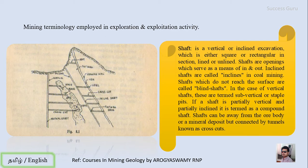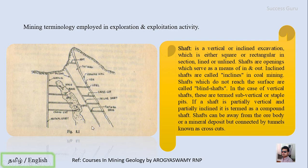Here are some of the parts of underground mining and what they are termed. The shaft can be a vertical or inclined excavation, either square or rectangular in section, lined or unlined. Shafts serve as means for entry and exit. An inclined shaft is called an incline in coal mining. A shaft that does not reach the surface is called a blind shaft; in the case of a vertical shaft these are termed subverticals or staple pits. If the shaft is partially vertical and partially inclined, it is termed a compound shaft. A shaft can be away from the ore body but connected by a tunnel known as a cross cut.